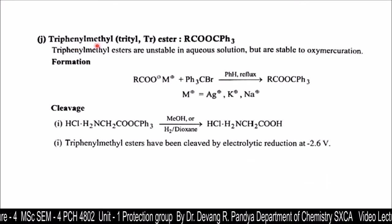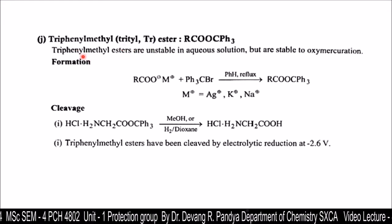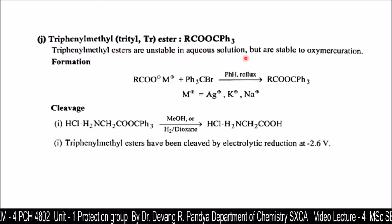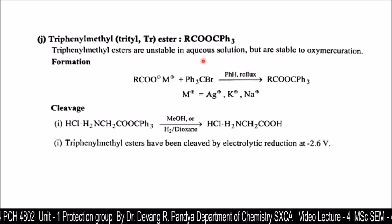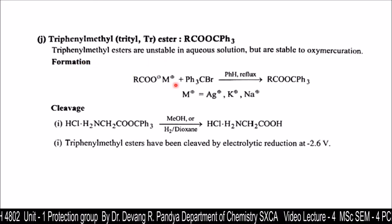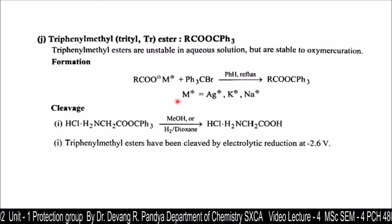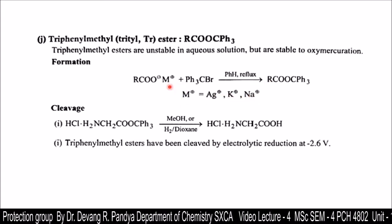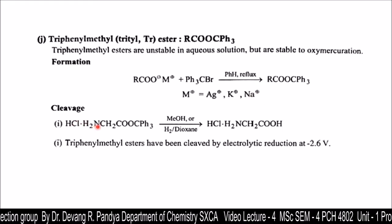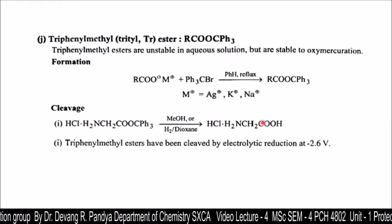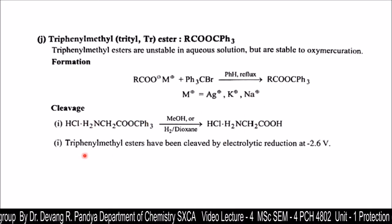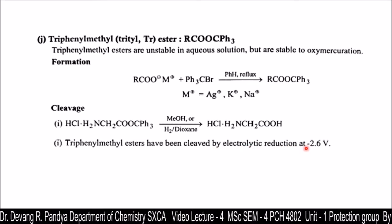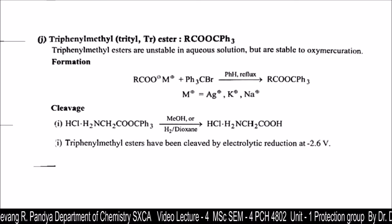Now, the triphenylmethyl (trityl) ester: triphenylmethyl esters are unstable under aqueous conditions but are stable to oxymercuration. In formation, the metal can be silver, potassium, or sodium. The cleavage — deprotection — gives back the carboxylic group. Triphenylmethyl esters have been cleaved by electrolytic reduction at −2.6 V.